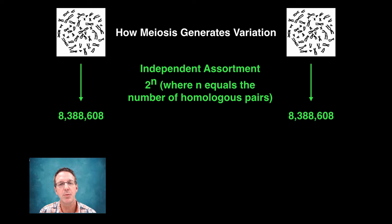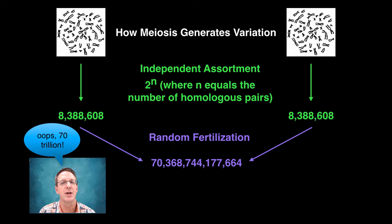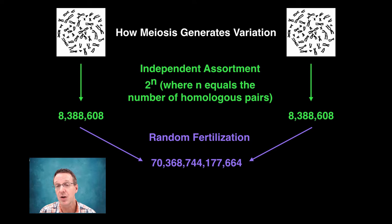If you then randomly fertilize any of those sperm with any one of those eggs, you now have over 7 trillion different possible genotypes for the new individual. And while that in and of itself is impressive, this does not even factor in the process of crossing over during prophase 1, which would give rise to incalculable variation. So, that's pretty mind-boggling.